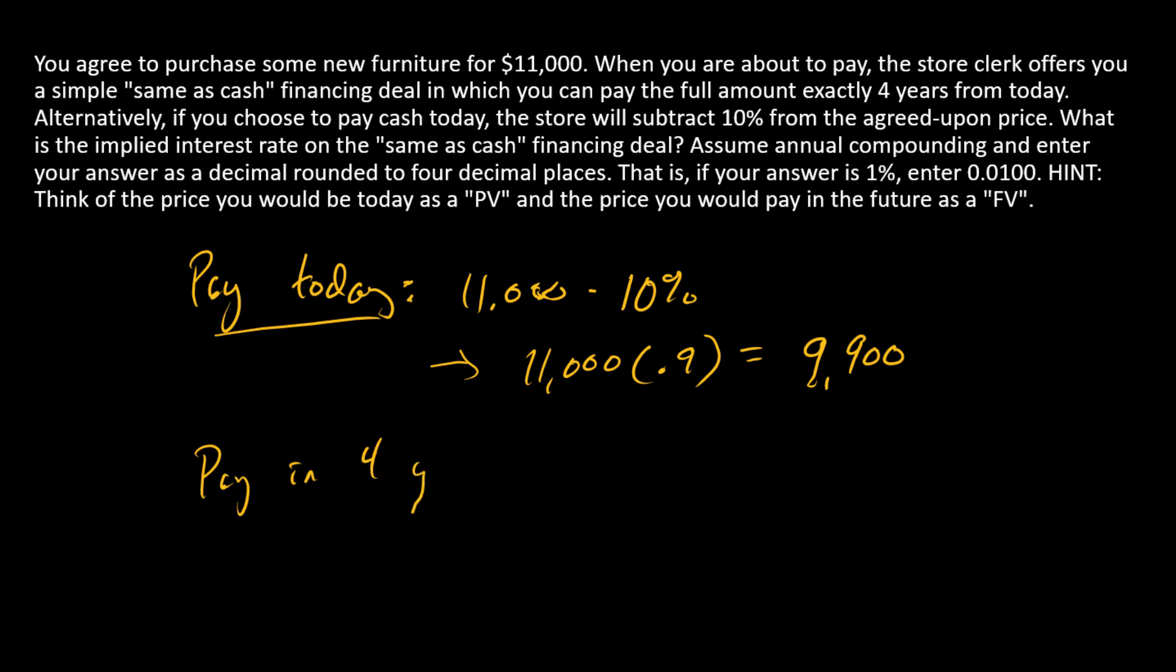Alternatively, if you pay in four years, you end up paying the full amount. So if you pay in four years, you're going to pay $11,000. So there's your payment options, one or two. What do we ask for?